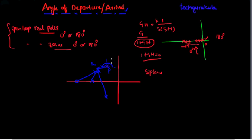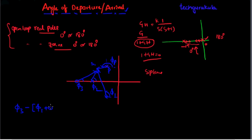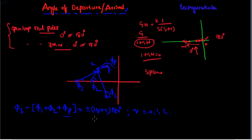As S1 approaches very close to pole P with negligible difference, we write the net angle condition: angle from zeros minus angle from poles, which is phi_3 minus (phi_1 plus phi_2 plus phi_P), must equal plus or minus (2Q plus 1) times 180 degrees, where Q equals 0, 1, 2, and so on. This equation remains valid as S1 tends to P.